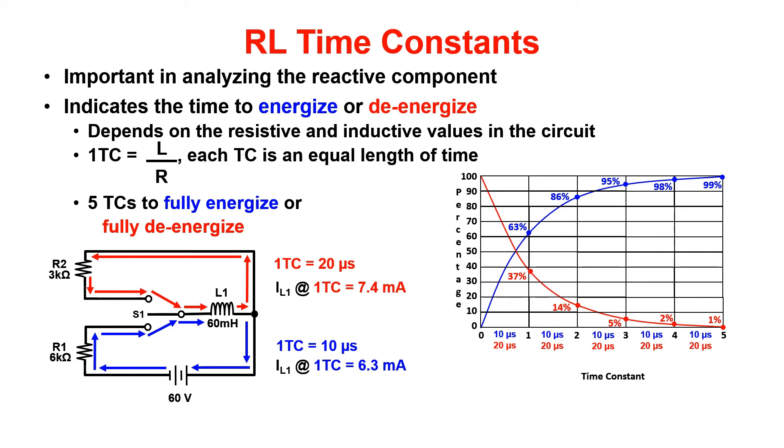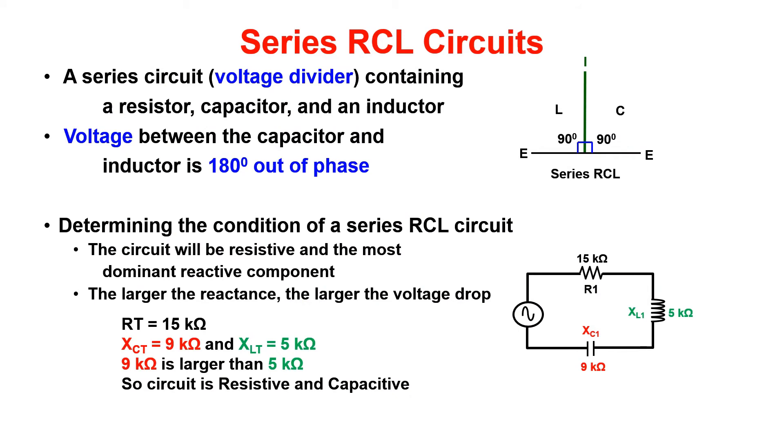This brings us to the phase relationship between capacitors and inductors. First, let's start with a series circuit. A series RCL circuit contains a resistor, an inductor, and a capacitor. The voltage between the capacitor and the inductor is 180 degrees out of phase.